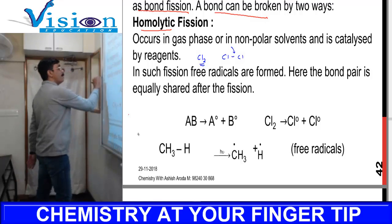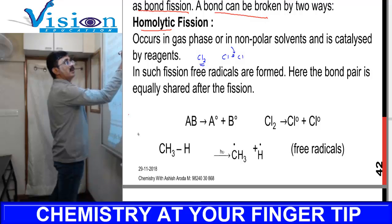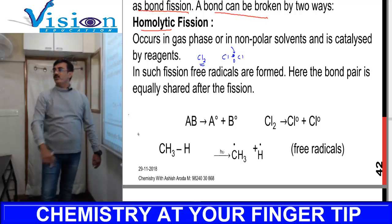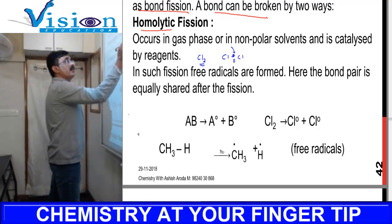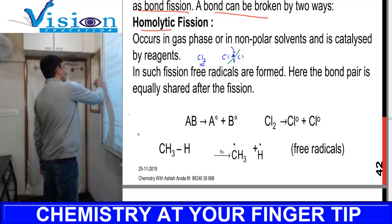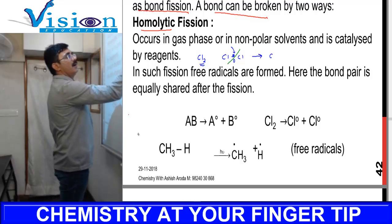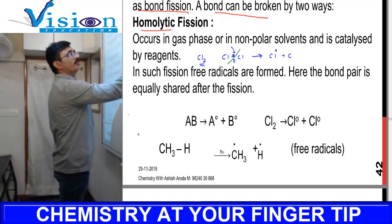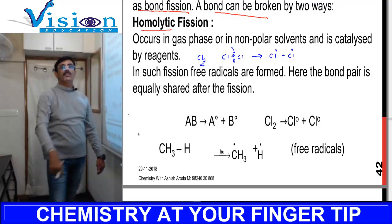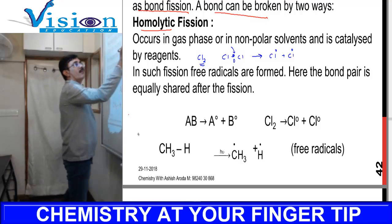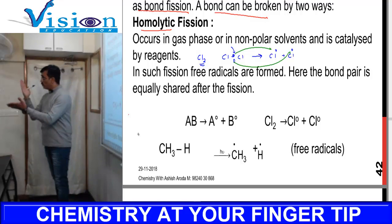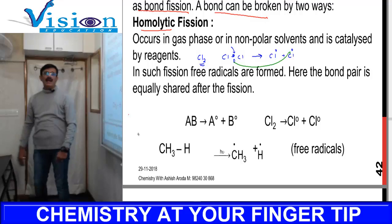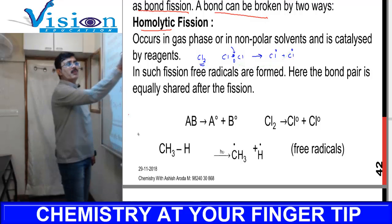Chlorine has a single bond — both atoms are sharing one electron each in a covalent bond. When this bond breaks, it breaks equally: both atoms each take one electron from the bonded pair. This produces free radicals — each chlorine atom takes one electron and leaves as a free radical.